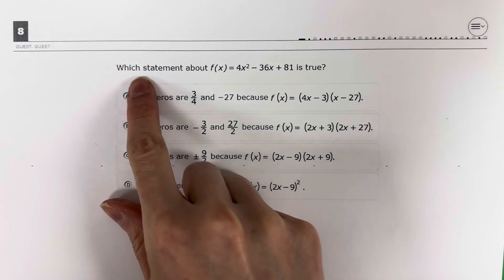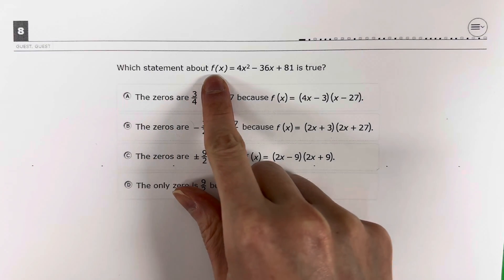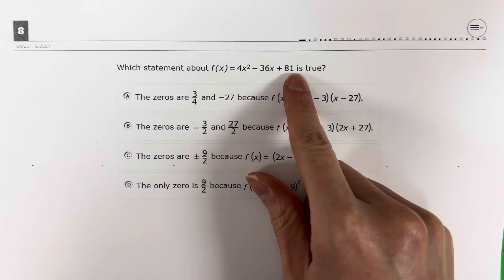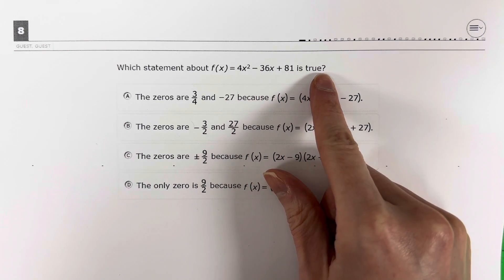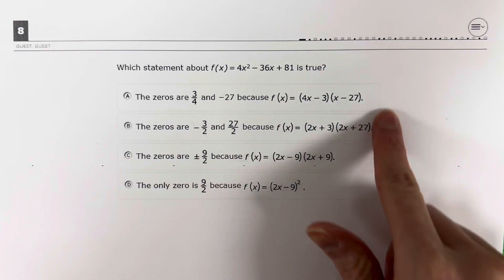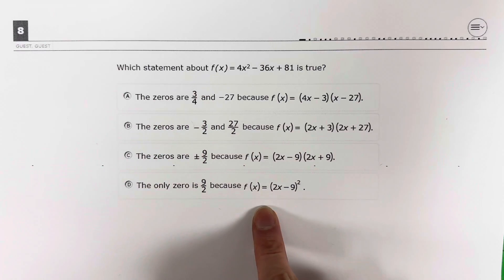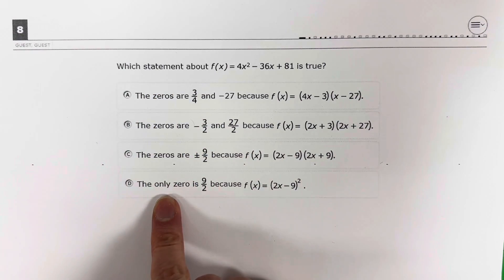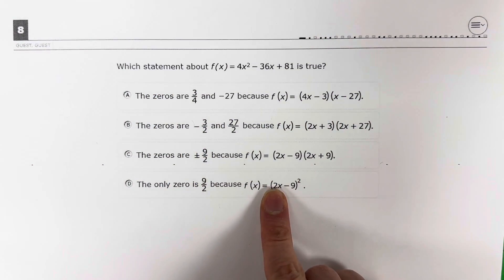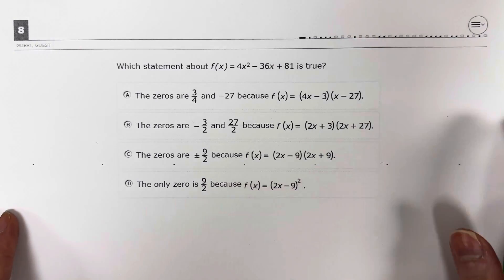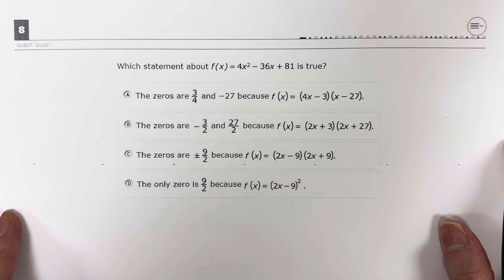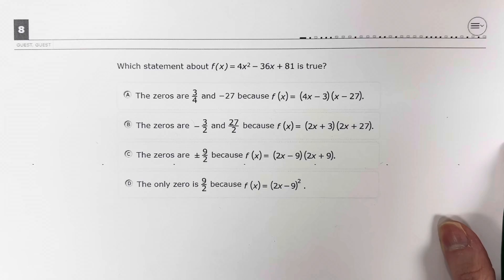Question 8. Which statement about f of x equals 4x squared minus 36x plus 81 is true? Looking at the answer choices, we need to find the zeros and also factor it. In this video, I'm going to show you how to do both. Let's go ahead and begin.